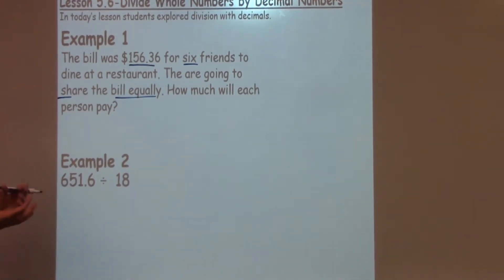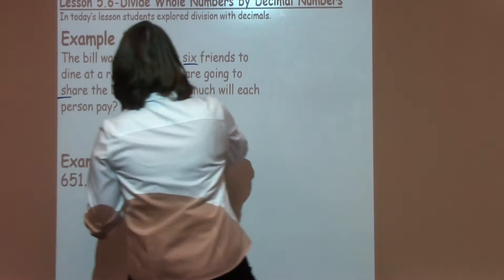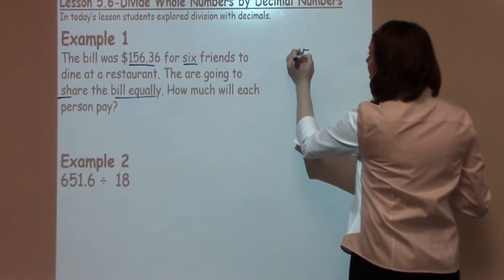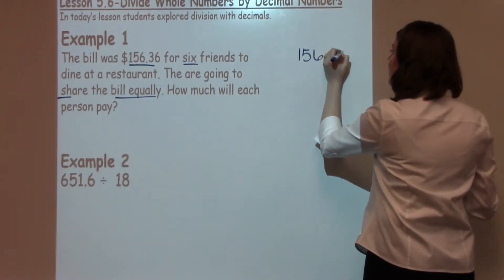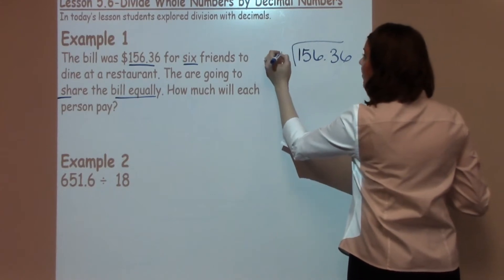Well, as I was reading and thinking, I heard that I'm going to do some division. I'm also going to be using a division of decimal in this case. So I'm going to take my $156.36 and I'm going to divide it by my six friends.